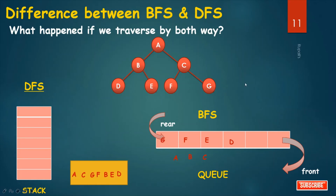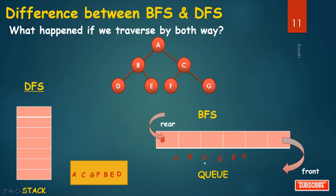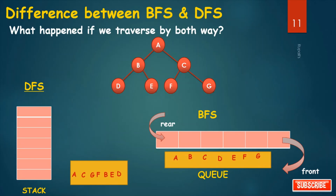Remove D — connected node is only B, which is in status 3. Remove E — connected node is only B, in status 3. Remove F — connected node is only C, in status 3. Remove G — connected node is only C, in status 3. So our BFS traversal result is: A, B, C, D, E, F, G.